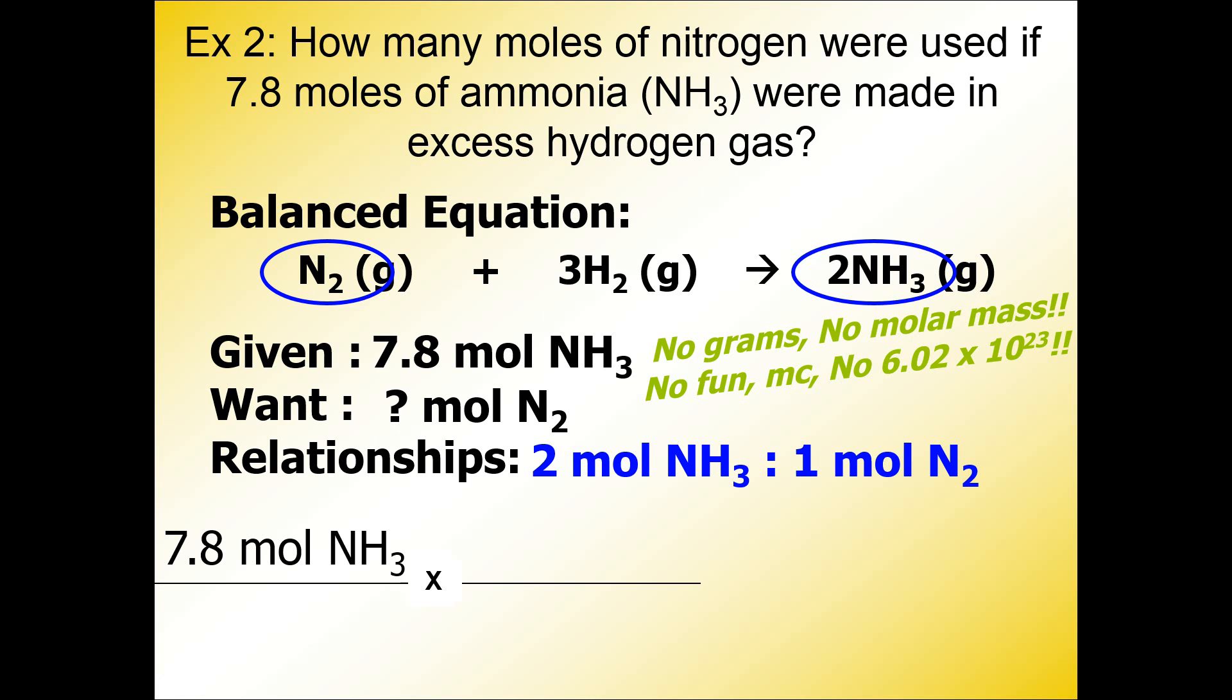The given over 1 is how we always begin our problems. The given is 7.8 moles of NH3. Then you're going to use the unit and the substance to guide you to the next step. We're going to look in our ratios for wherever we see moles of NH3, and we're going to take this piece of the ratio and put it in the denominator. We need the unit and the substance to cancel out diagonally, and when we do so, we put the other side of the ratio above it.